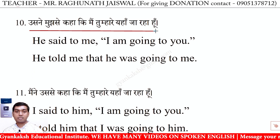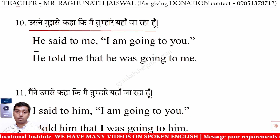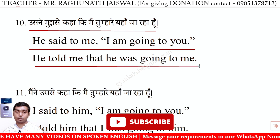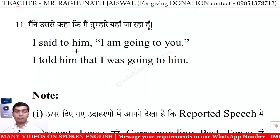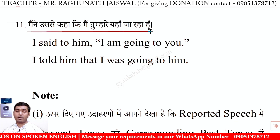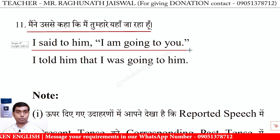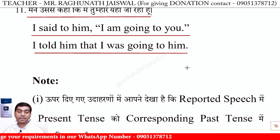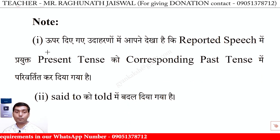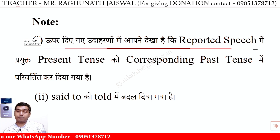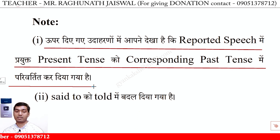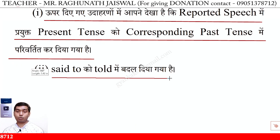Us ne mujhse kaha ki mein tumhare yahan ja raha hoon. He said to me, 'I am going to you.' He told me that he was going to me. Maine usse kaha ki mein tumhare yahan ja raha hoon. I said to him, 'I am going to you.' I told him that I was going to you. Note: In the above examples, the present tense used in reported speech has been converted to the corresponding past tense, and 'said to' has been changed to 'told.'